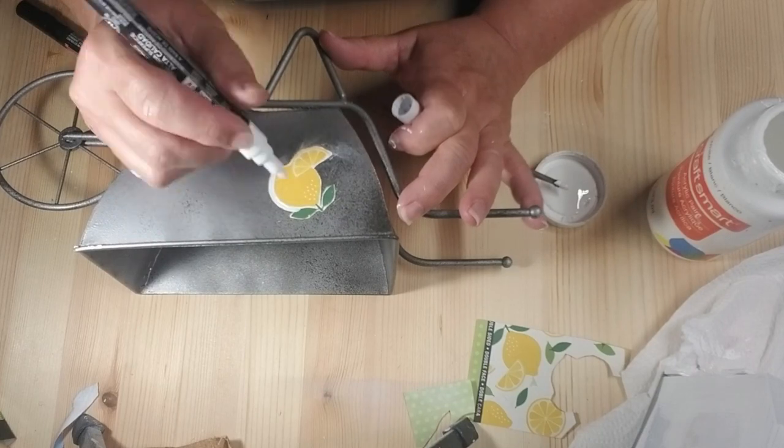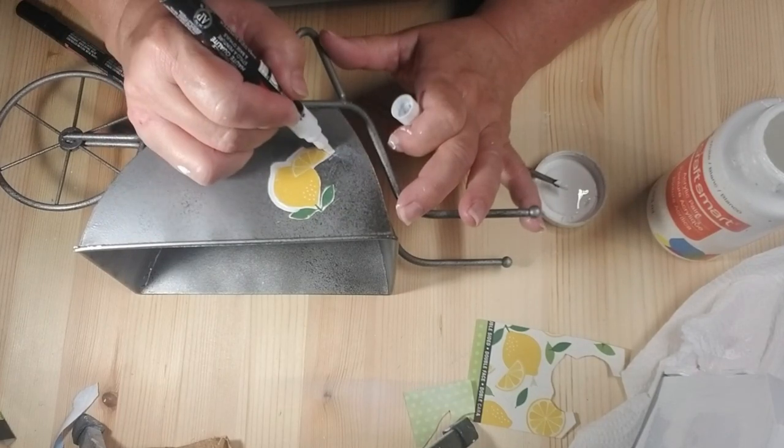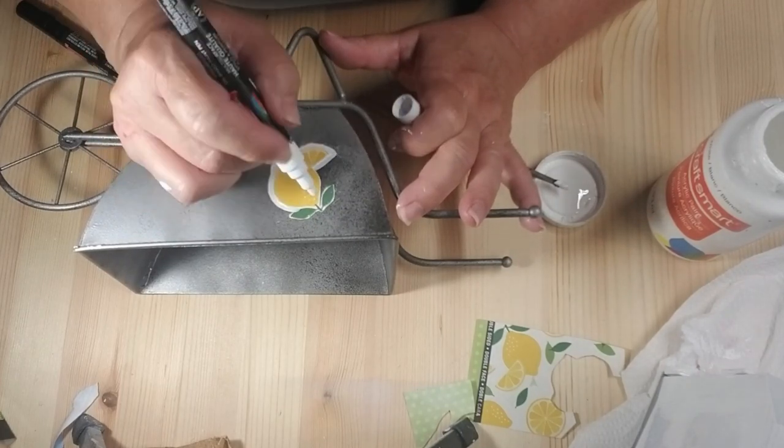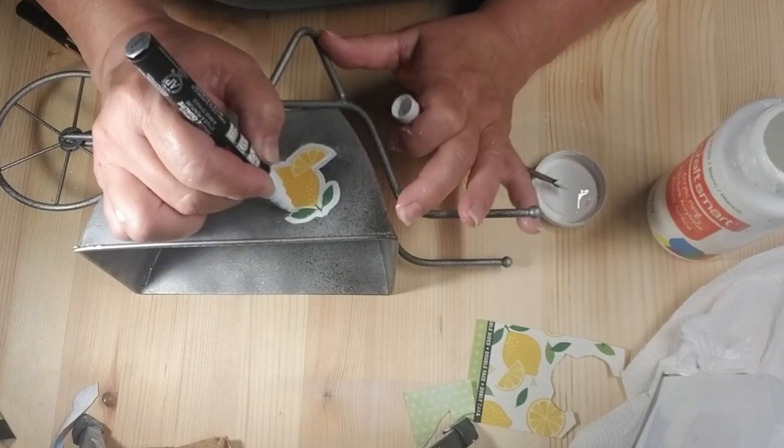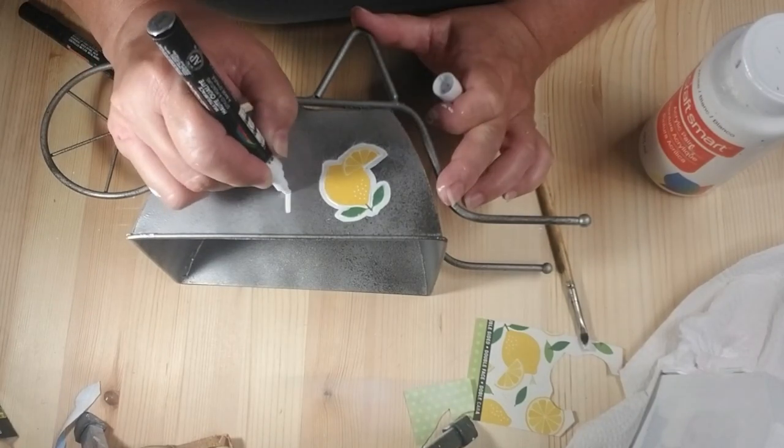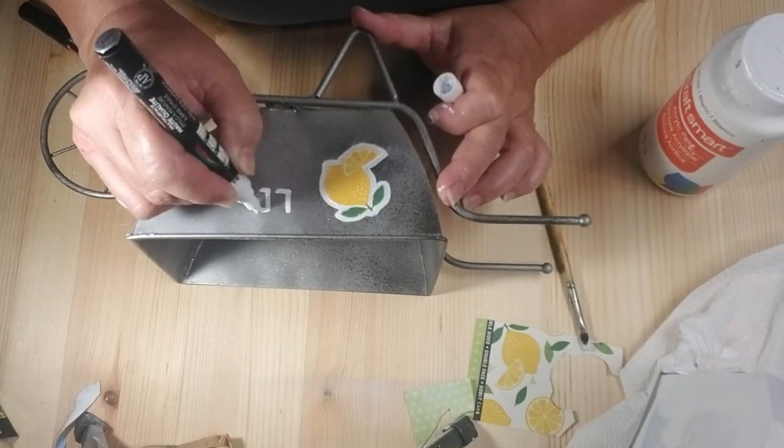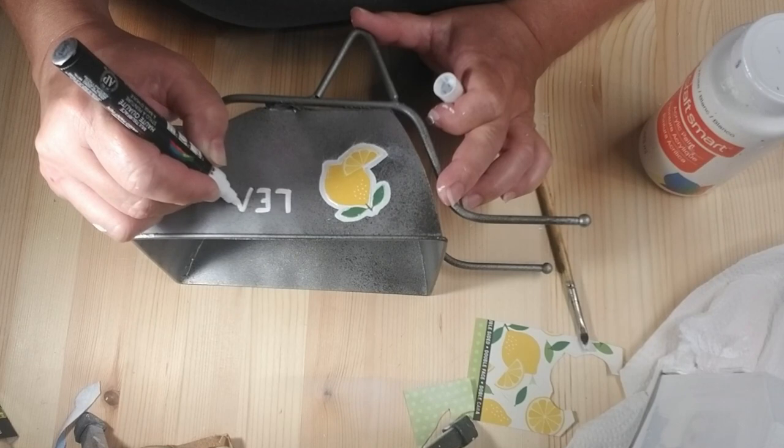Here I'm using my Craft Smart oil-based paint pen in white just to outline the lemon picture. It's just going to make it pop a little bit more against the metal. Using the same marker I'm going to freehand the word lemons and then 25 cents.